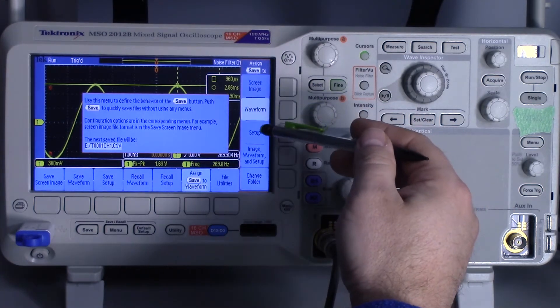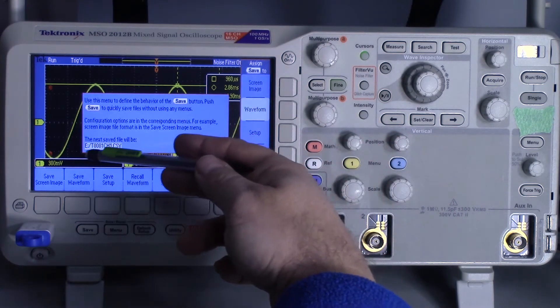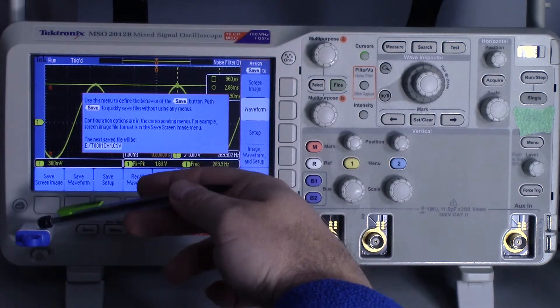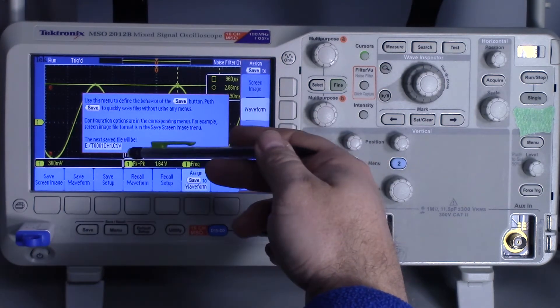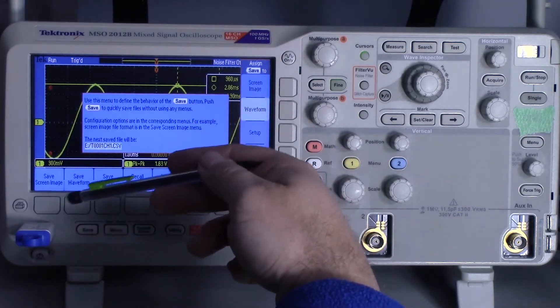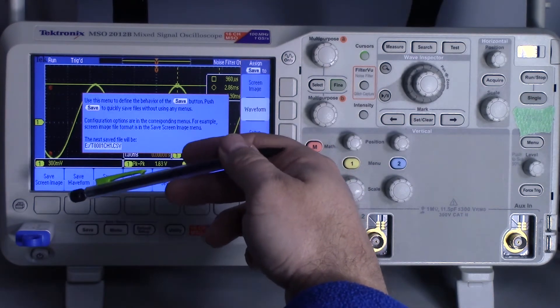We can save the waveform. It's going to set up a CSV file, and this tells you where it's going to save it. I've got a USB flash drive in here, so it goes to there by default. You can set it up internally, but this thing will just gobble up memory and there's not a whole lot built into the machine.